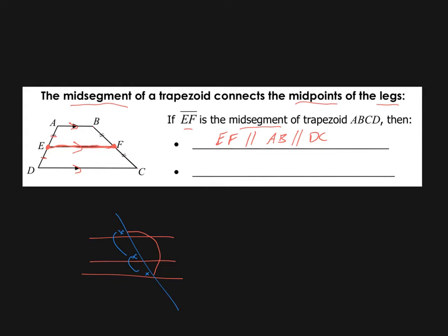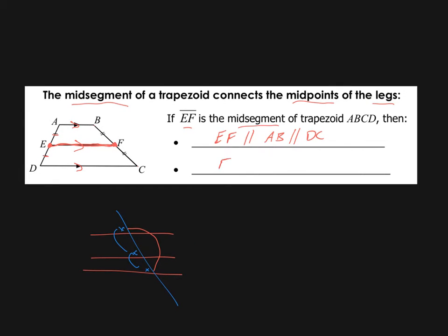The other piece is that the length of EF is going to be equal to half, so we're going to divide by two, the length of AB plus DC. If you add this length to this length, and you combine them and divide it by two, you're going to get the length of EF. So let's see how this works out in practice. It's going to be super easy and super fast.